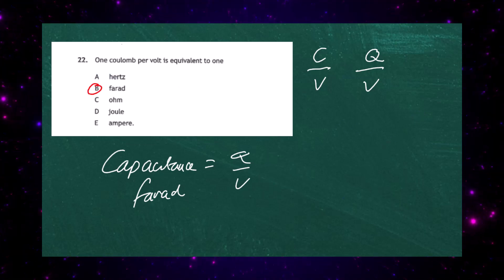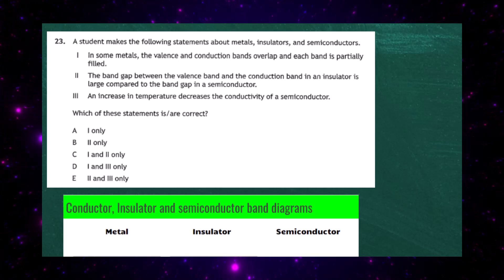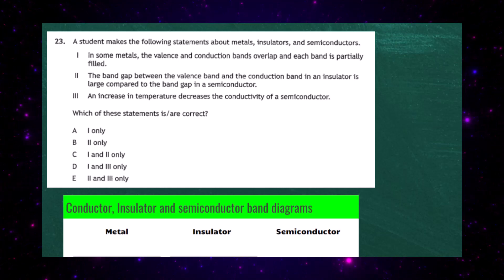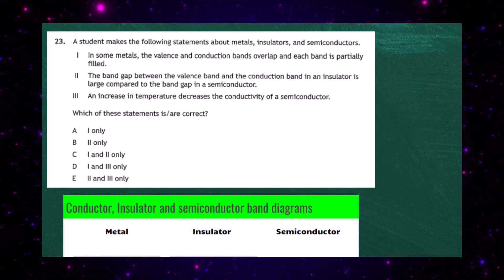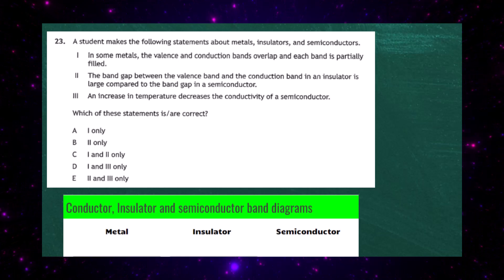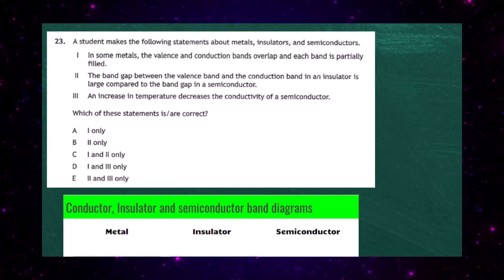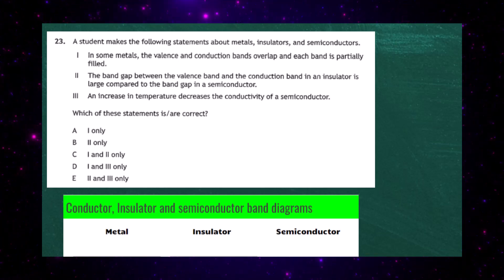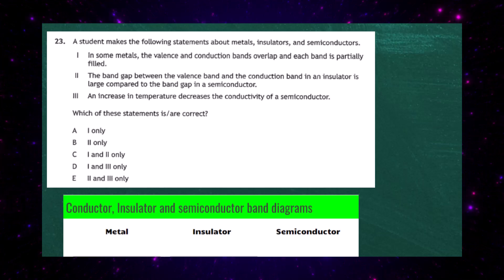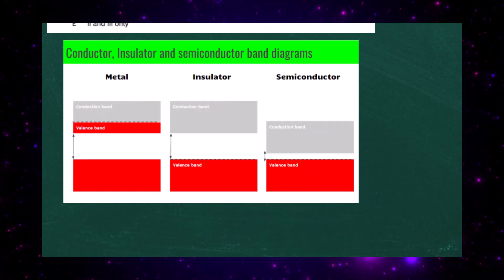The answer to Question 22 is B. Question 23 from paper 1 of the 2023 Higher Physics Exam. A student makes the following statements about metals, insulators, and semiconductors. Statement 1: in some metals, the valence and conduction bands overlap and each band is partially filled. Statement 2: the band gap between the valence band and conduction band in an insulator is very large compared to the band gap in a semiconductor. Statement 3: an increase in temperature decreases the conductivity of a semiconductor.